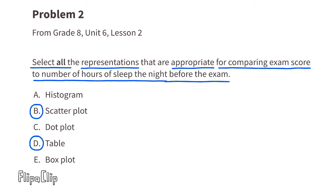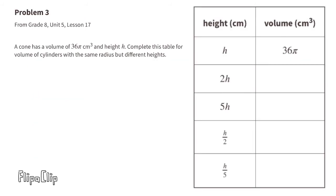Problem Number 3 from eighth grade Unit 5 Lesson 17: A cone has a volume of 36π cm³ and height h. Complete this table for volume of cylinders with the same radius but different heights. When the height is 1h, the volume in centimeters cubed is 36π.